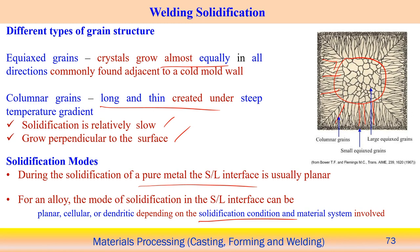Overall, during solidification it can either create an equiaxed structure, following certain specific solidification conditions, or create a columnar structure going in one particular direction. At the center you can find an equiaxed structure, but grain size is relatively bigger. It depends on the rate of solidification, the temperature gradient, and the way heat is being extracted from the content. Based on that, different types of structure are usually formed.